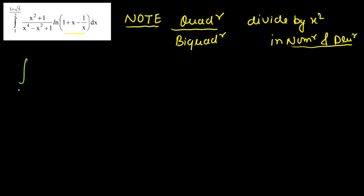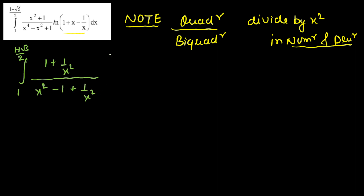So the integration limits remain 1 to (1 + √5)/2. After dividing by x², we get (1 + 1/x²) in the numerator, and in the denominator we get x² - 1 + 1/x². Then we have ln of (1 + x - 1/x).